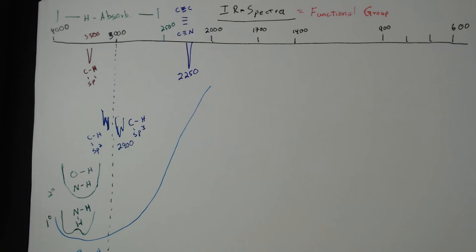The next zone is the triple bonds. There are only two types: the carbon-carbon triple bond and the carbon-nitrogen triple bond. Almost invariably, they always show up at 2,250. This part of a normal infrared spectrum is usually flat, and you'll see spectrum after spectrum that is flat in this region.